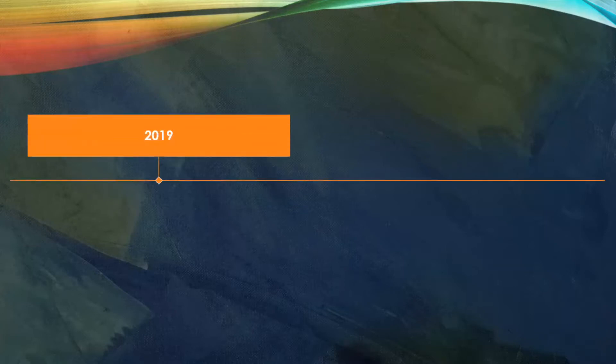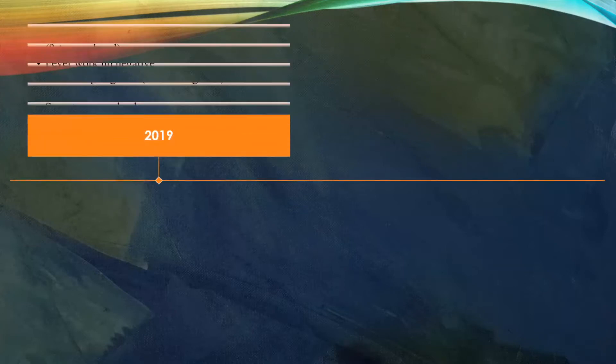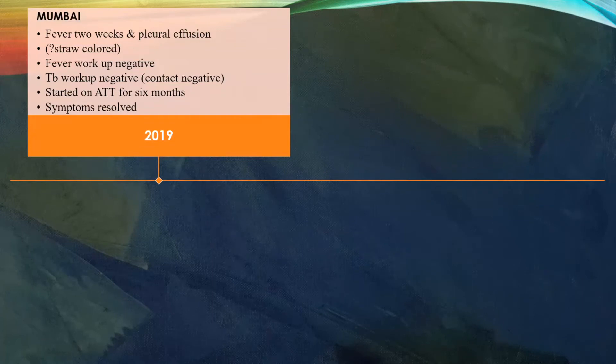A child is around five years old. She was admitted in 2019 at Mumbai for fever of two weeks duration and was found to have pleural effusion. The pleural effusion was straw colored. Fever and TB workup turned negative, contact was also negative. She was started on ATT empirically for six months, following which the symptoms resolved.